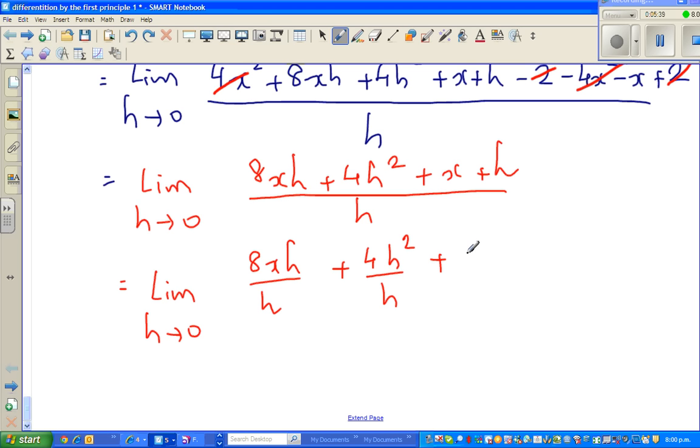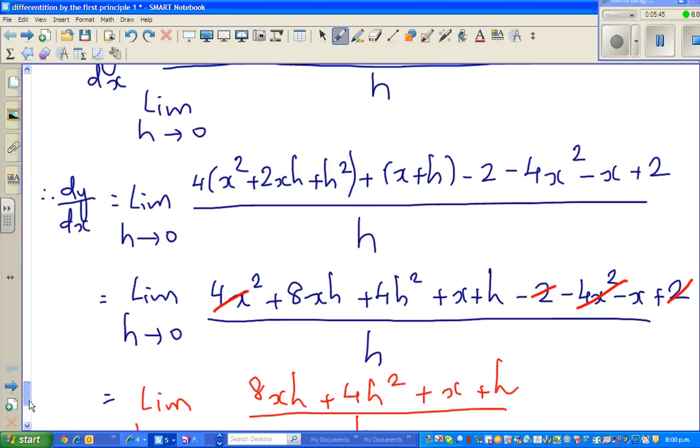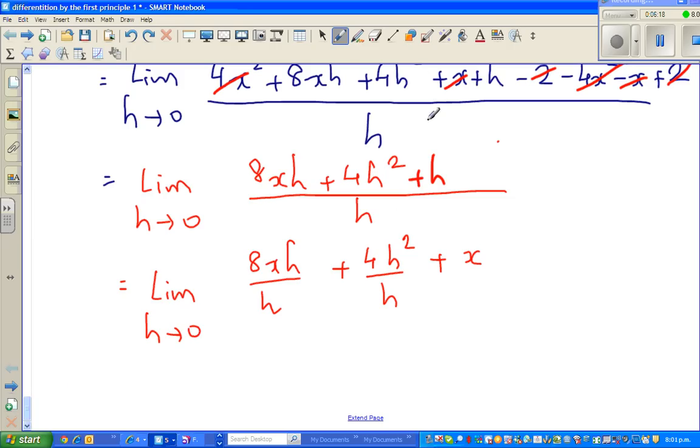Let me go back and look at the question. 8x plus 1 should be the answer. This is my mistake. This x and minus x gets canceled. So let me cancel this. So this is 8xh plus h. That's right. So this is always good to check. How could I find my mistake? Because I know by the formula the answer should be 8x plus 1.